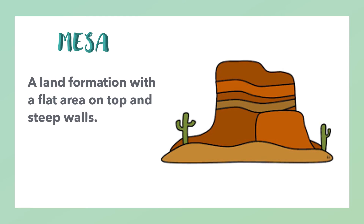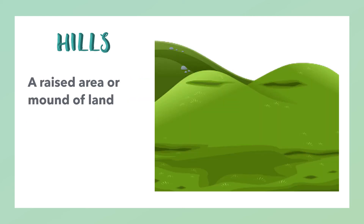Mesa: a land formation with a flat area on top and steep walls. Hills: a raised area or mound of land.